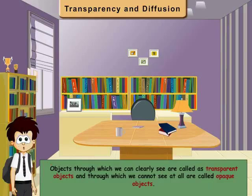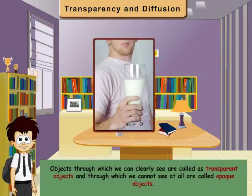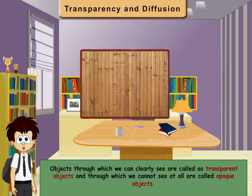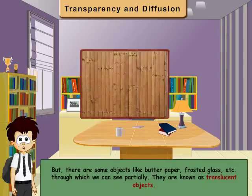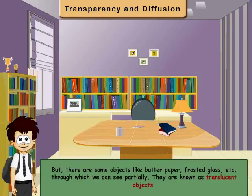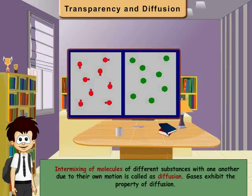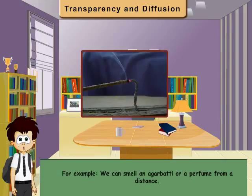Objects through which we can clearly see are called transparent objects, and through which we cannot see are called opaque objects. But there are some objects like butter paper, frosted glass, etc., through which we can see partially — they are known as translucent objects. Intermixing of molecules of different substances with one another due to their own motion is called diffusion. Gases exhibit the property of diffusion. For example, we can smell an agarbatti or a perfume from a distance.